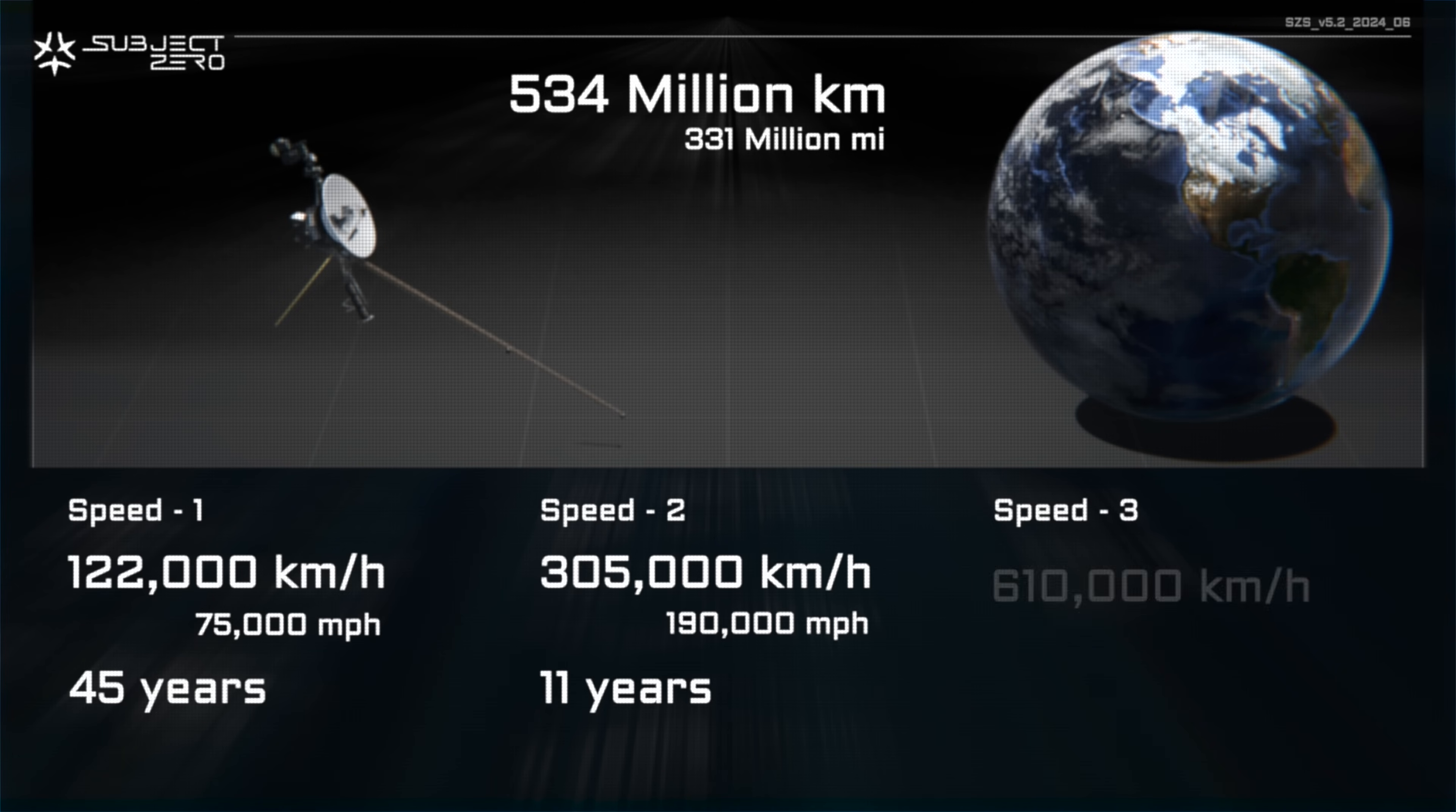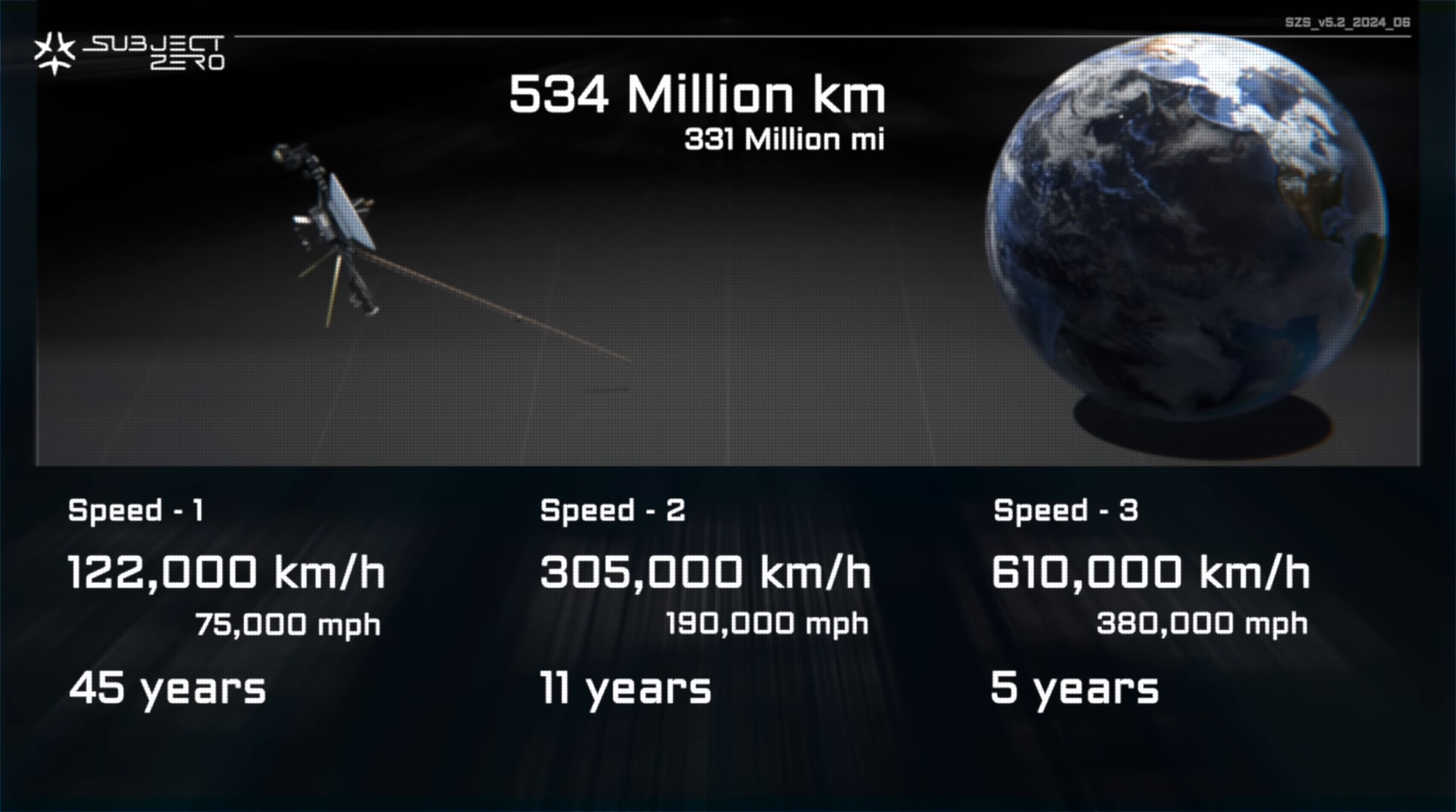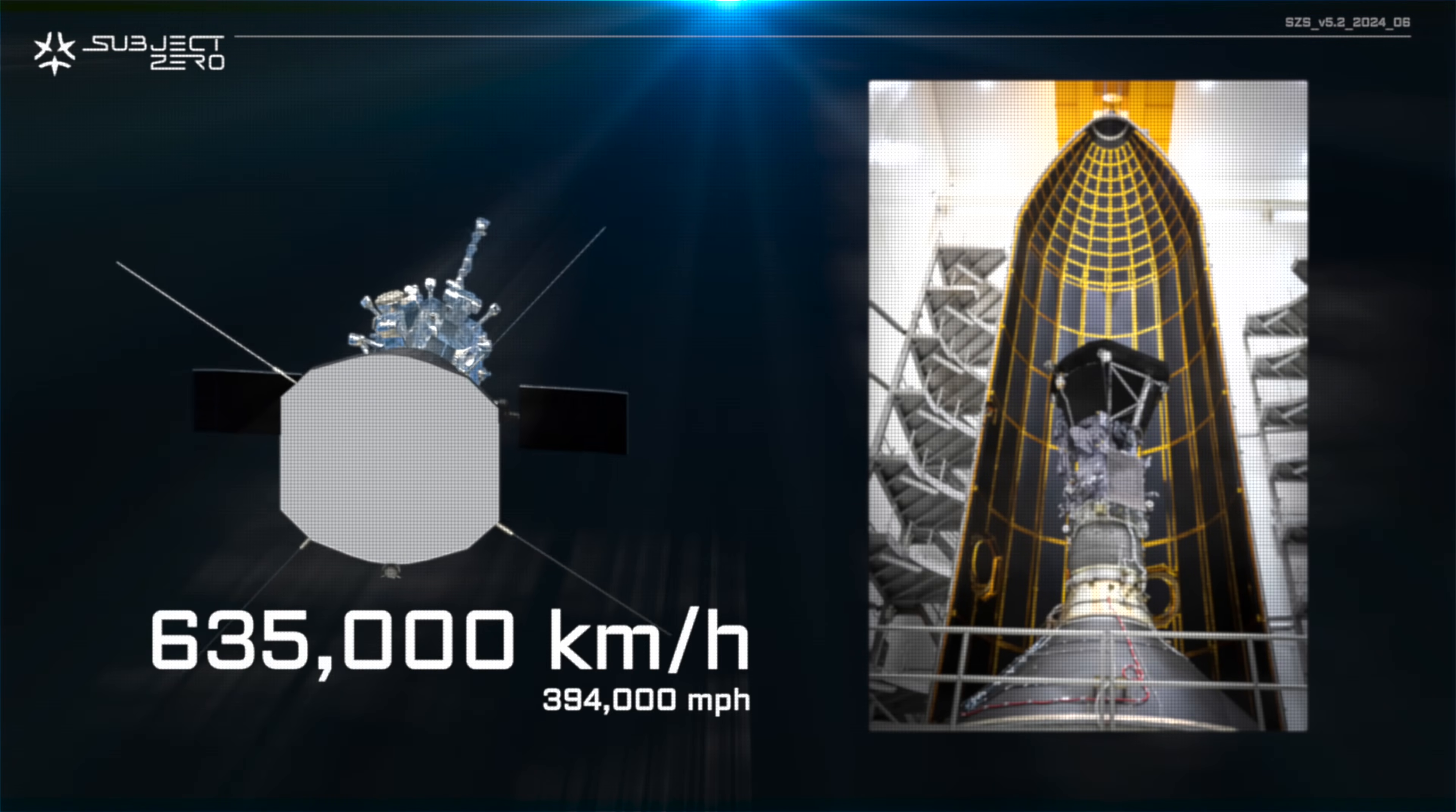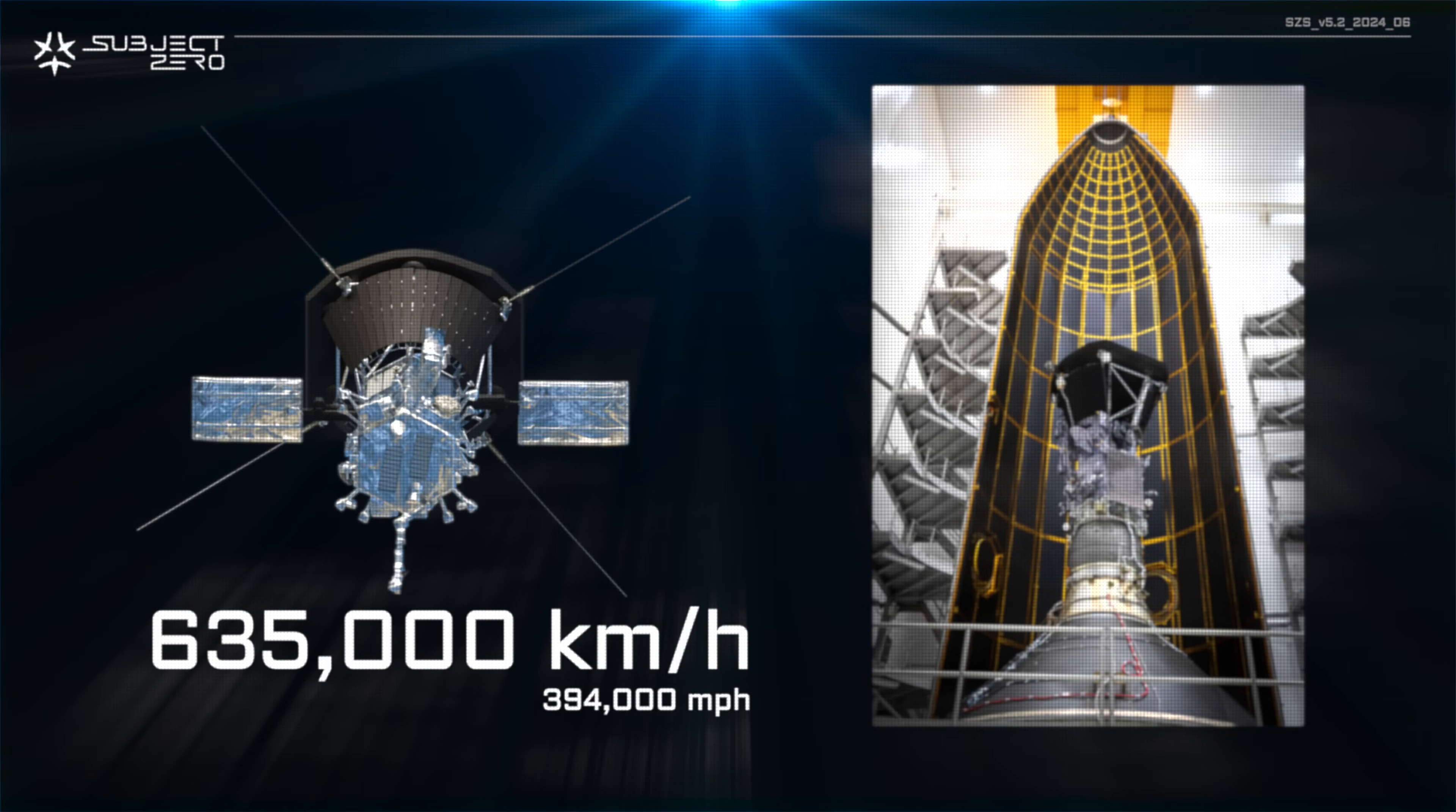But the best speed to aim for is around 610,000 kilometers an hour, requiring only 5 years to reach the probe. There is only one man-made object that has reached that speed, and that is the NASA Parker Solar Probe. It set the record speed of 635,000 kilometers an hour.